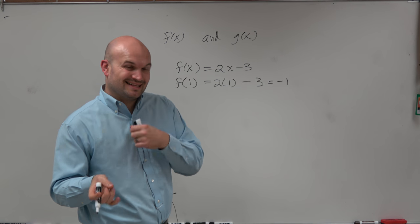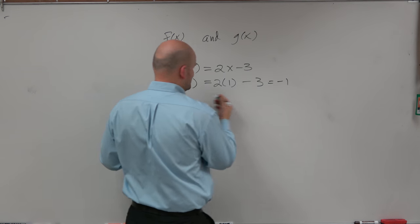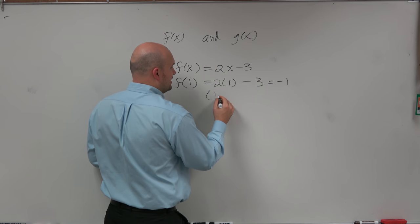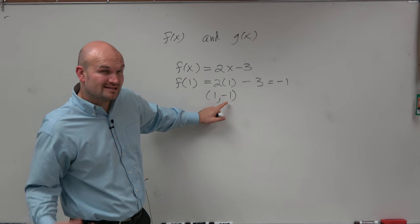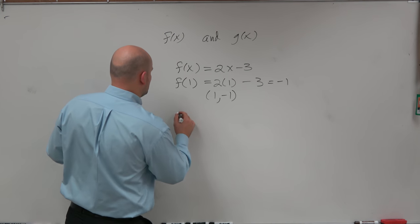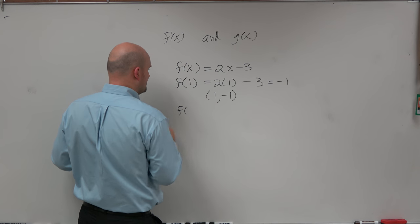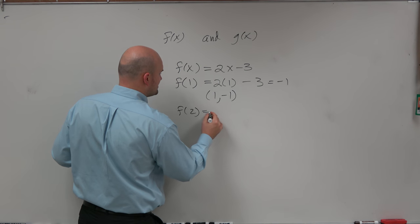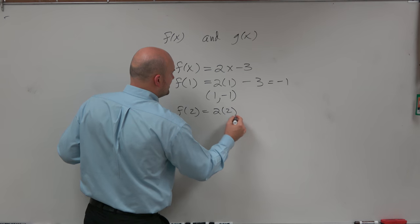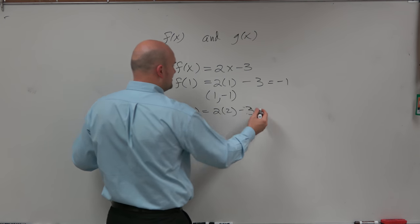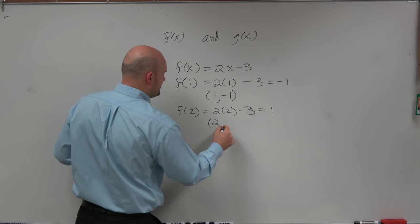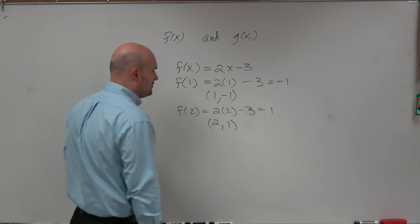And you can think of functions as like that input-output. We can write this as a coordinate point here, 1 comma negative 1, where x is my input, negative 1 is my output. And we can continue this pattern, picking any numbers that we want and do the exact same thing. That equals 1. So therefore, this input-output would be 2 comma 1.